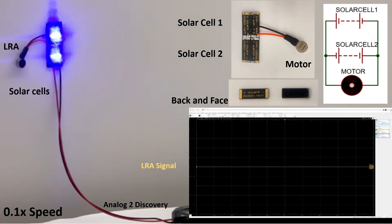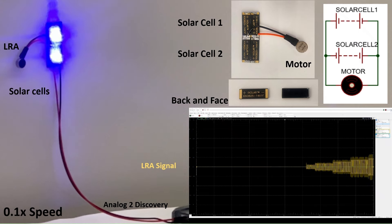In contrast, the PV cells are connected in parallel but in the opposite direction to generate AC signals to drive the LRAs.